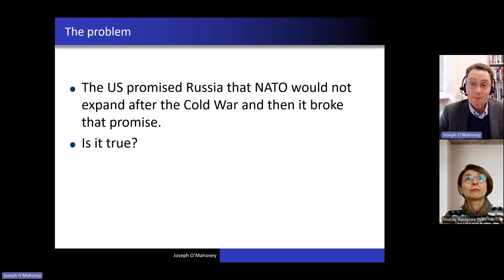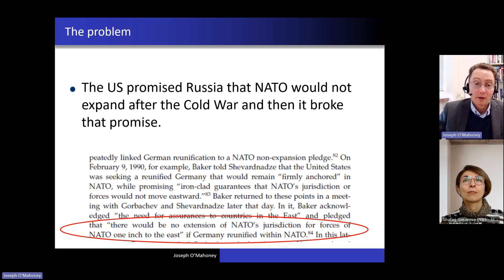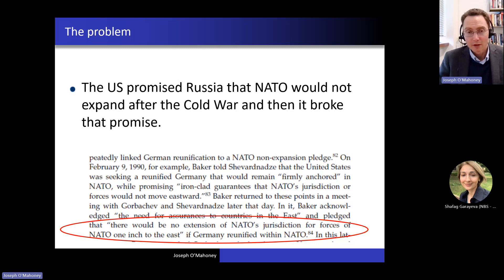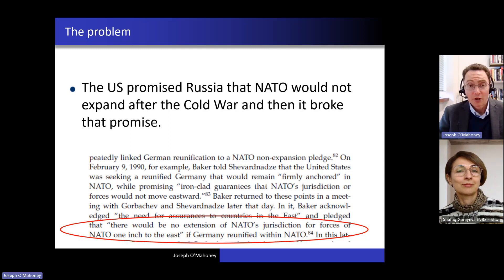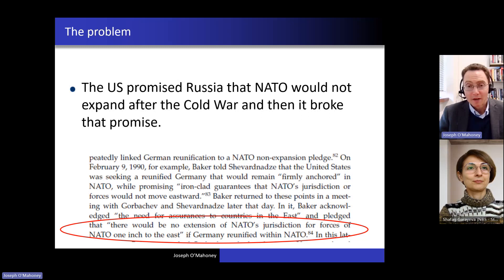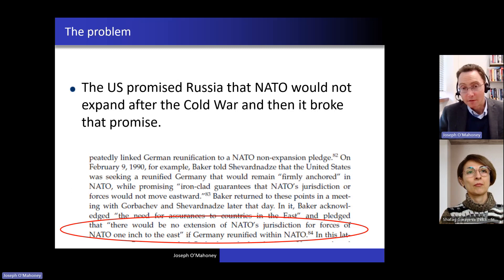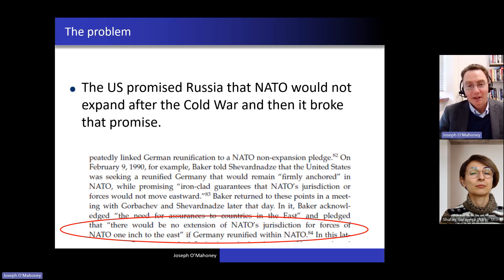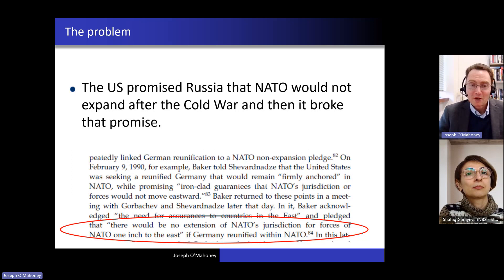So how do we know if it's true? There have been various articles published about this. One thing we could do is read an article that talks about this issue. This is an extract from one such article by Joshua Shifrinson — a well-regarded article — where he goes into a lot of detail about who said what to whom between the U.S. and the Soviet Union, in particular James Baker and Eduard Shevardnadze, and Gorbachev, in February 1990. There's a meeting where James Baker, talking to Shevardnadze and Gorbachev, says: 'There would be no extension of NATO's jurisdiction for forces of NATO one inch to the east.'